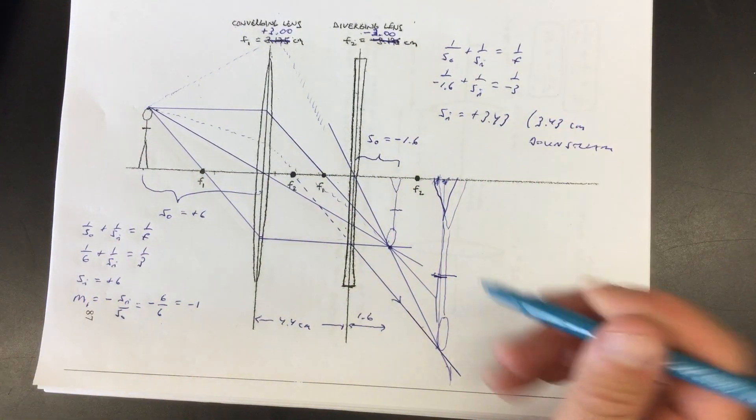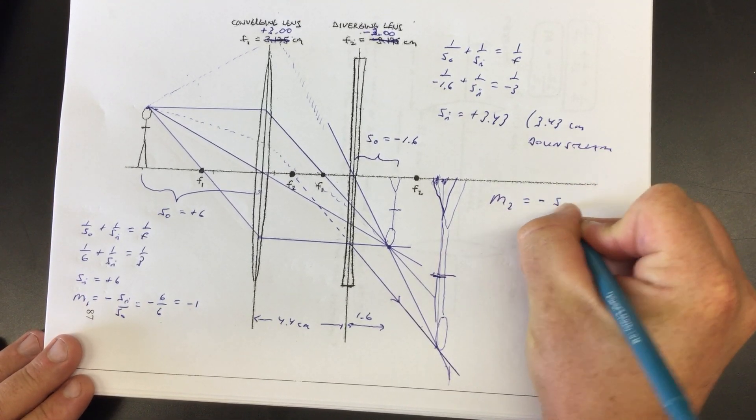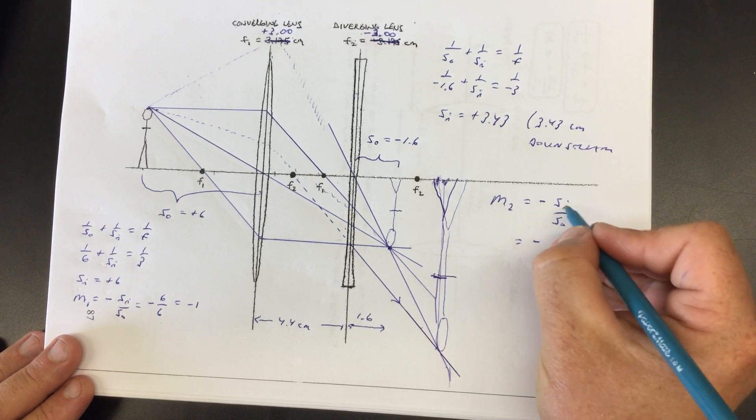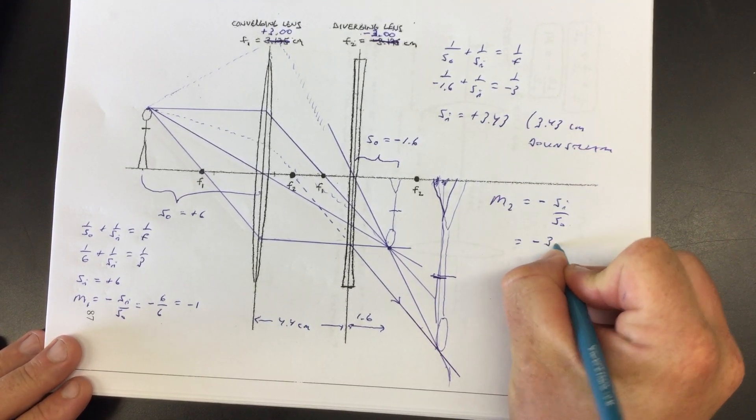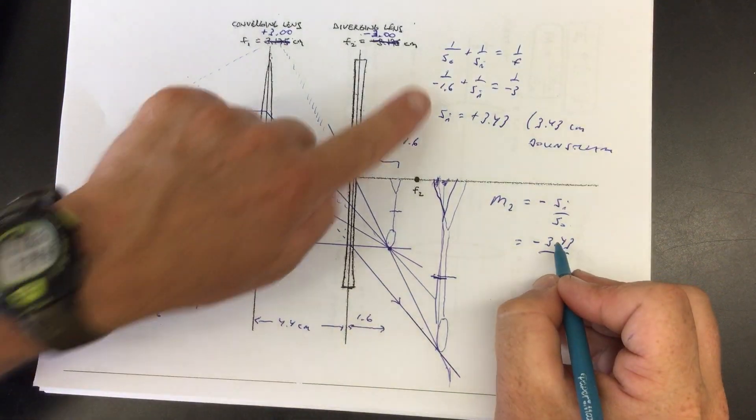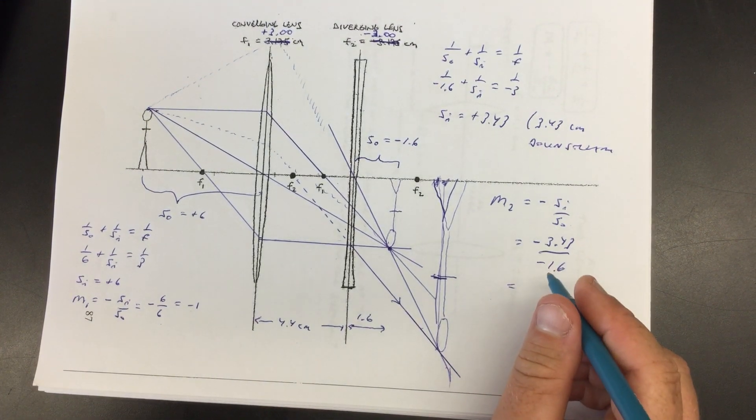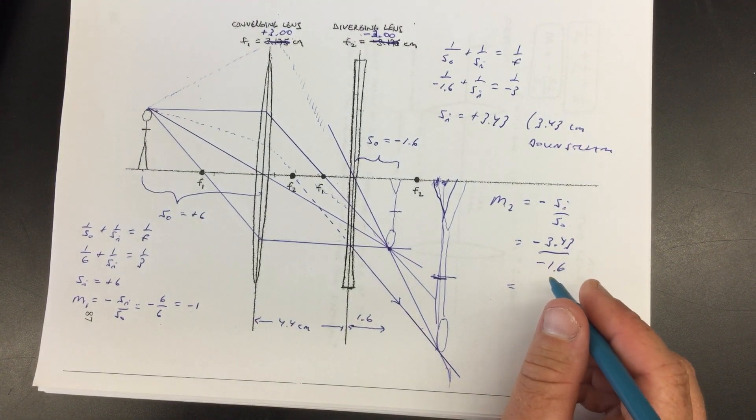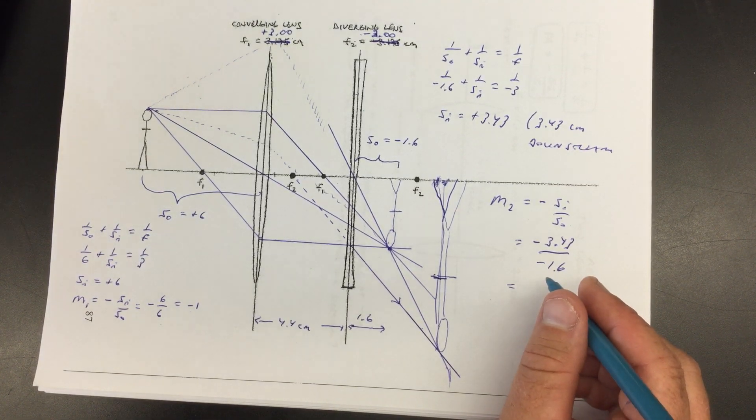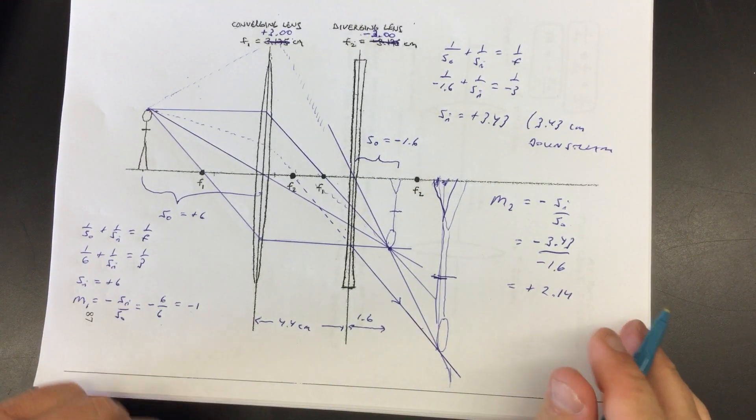And then now let's check the magnification. The magnification for lens two is supposed to be minus S I over S O. So minus, well S I was 3.43. So minus, and then we'll put 3.43 over S O was negative 1.6. So magnification for lens two is 3.43 divided by 1.6. I'm doing that on a calculator. I get 2.14, positive 2.14.